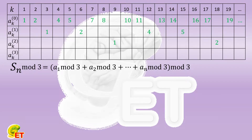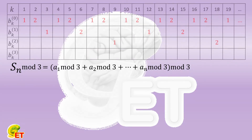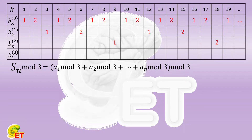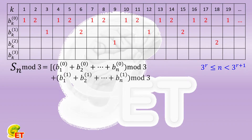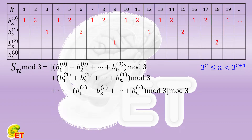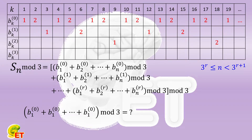We call these remainders b(k). Now let's arbitrarily select a number n, assuming it is not smaller than 3 to the power of r and smaller than 3 to the power of r+1. In this case we can write down b(k) of each row one by one, all the way to row r. Then let's see what the summation of b(k) in each row equals. We start from the first row — for instance, taking n as 10.